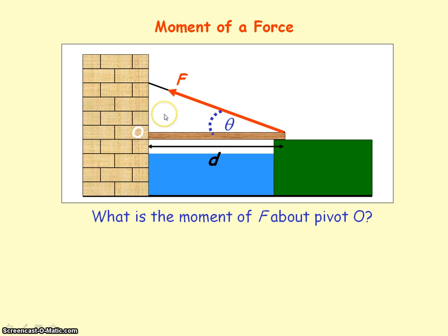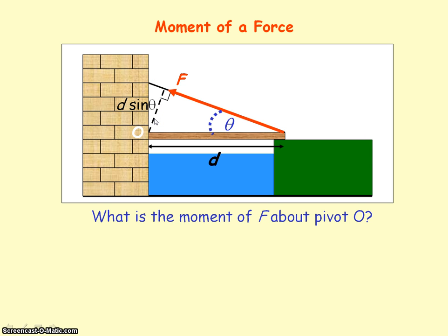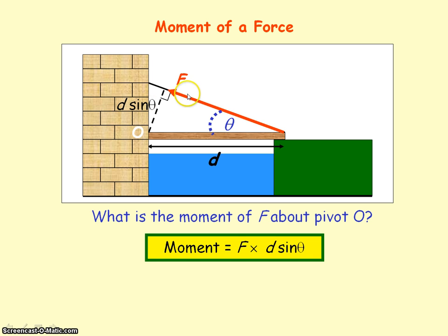Alternatively, you can find the perpendicular distance that the force is acting along relative to the pivot point. Using trigonometry: this perpendicular line is opposite to the angle, and distance D represents the hypotenuse. So we have the hypotenuse, the angle, and the opposite — so we use the sine term. This length will represent D sine theta. So the moment of the force about pivot point O is given by force F multiplied by the perpendicular distance D sine theta.